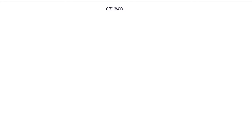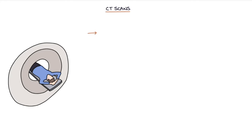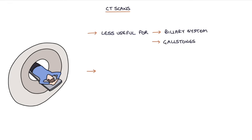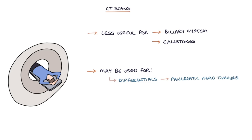Next, let's talk about CT scans. CT scans are less useful for looking at the biliary system and for gallstones. They may be used to look for differential diagnoses — for example, pancreatic head tumours — and also to assess complications such as perforation and abscesses.